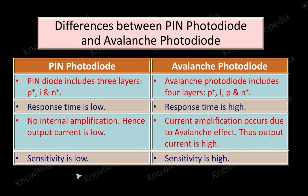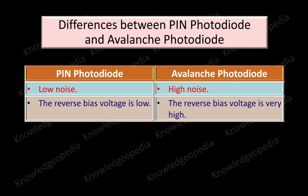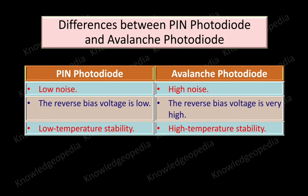The sensitivity is low in case of PIN photodiode and it is high in case of avalanche photodiode. Further, the noise is low in case of PIN photodiode but it is high in case of avalanche photodiode. The reverse bias required to operate a PIN photodiode is comparatively low, but it is very high in case of avalanche photodiode.